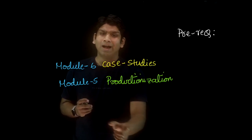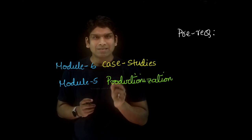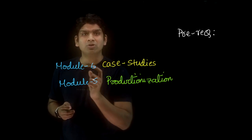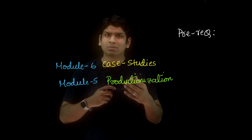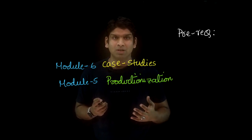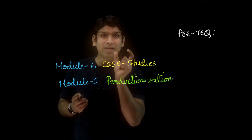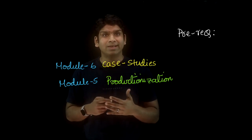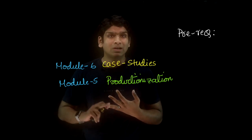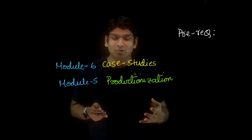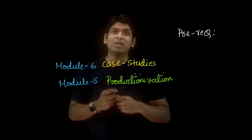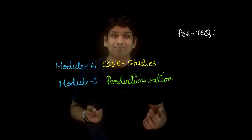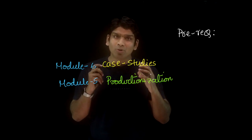We'll take actual real-world machine learning problems that actual data scientists and machine learning engineers at various companies would encounter, and discuss the various options and trade-offs when productionizing these systems. I'm going to assume that you have covered the case studies in module 6 and the productionization components in module 5 of our course videos, as well as some of the recent sessions around productionization. We'll look at problems from companies like Quora, Uber, Facebook, and Amazon.